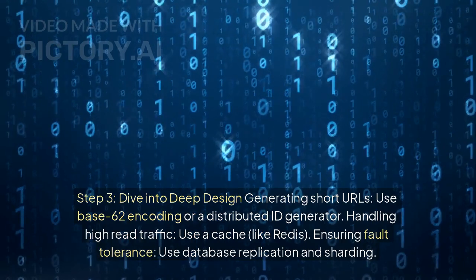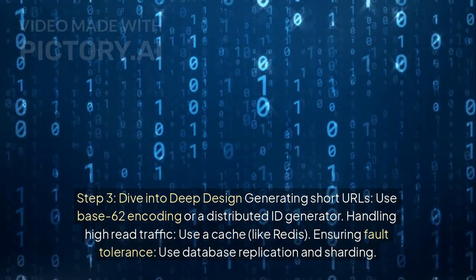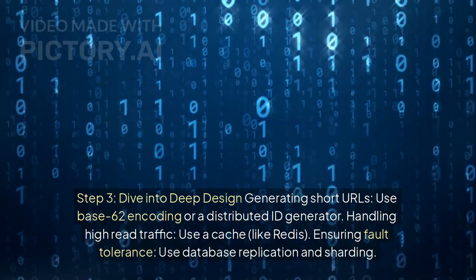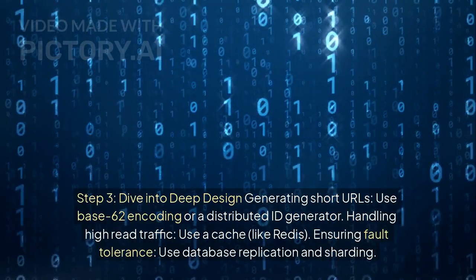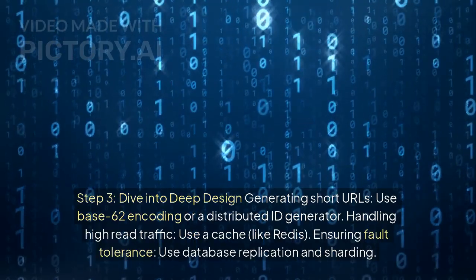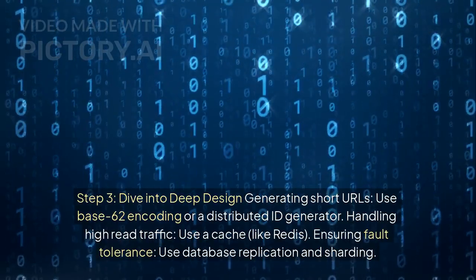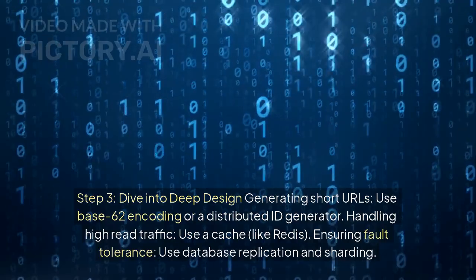Step 3: dive into deep design. Generating short URLs - use Base62 encoding or a distributed ID generator. Handling high read traffic - use a cache like Redis. Ensuring fault tolerance - use database replication and sharding.